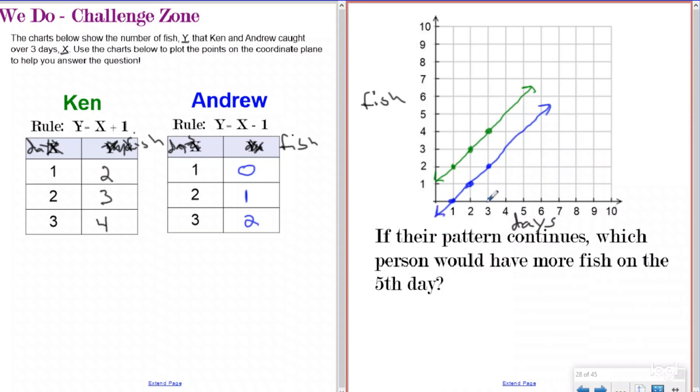My question says, if the pattern continues, which person would have more fish on the fifth day? So if I go over to X being five and I look up, I can see that Andrew would have had four fish and Ken would have had six fish. So my answer to this question should be Ken.